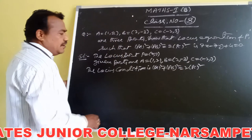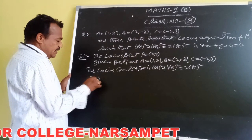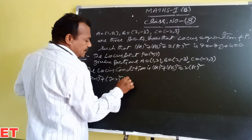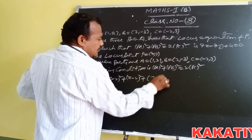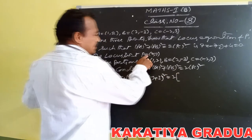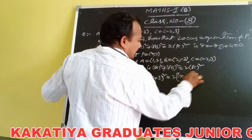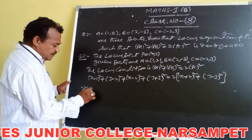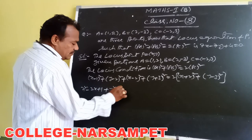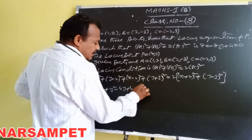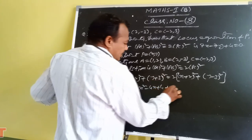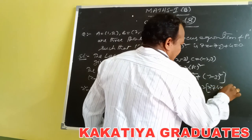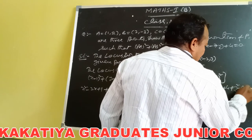PA squared is the square of the distance between P and A: X minus 1 whole square plus Y minus 2 whole square. Added to PB squared: X minus 2 whole square plus Y plus 3 whole square, equals 2 of PC squared, which is the square of the distance between P and C: X plus 2 whole square plus Y minus 3 whole square.